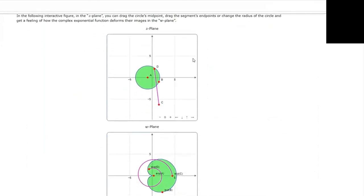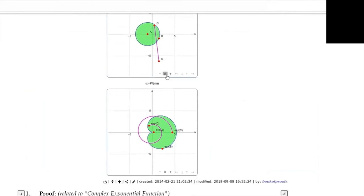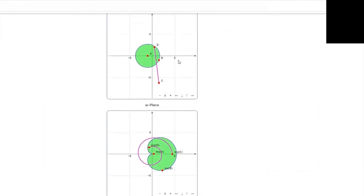Unlike in the real case, when we can map only one-dimensional intervals, in the complex case we can look at what happens if we map whole regions of the complex plane. In this case, we see how the complex exponential function maps a circular region green and a segment red from the z-plane into the w-plane.